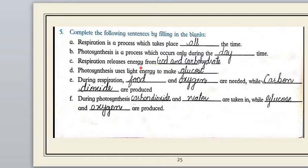The next statement: 'Respiration releases energy from __.' The answer is food or carbohydrates — respiration releases energy from foods or carbohydrates. Next: 'Photosynthesis uses light energy to make __.' During photosynthesis, plants prepare their food using carbon dioxide and water in the presence of sunlight and chlorophyll, forming a large molecule called glucose. So the blank is glucose.